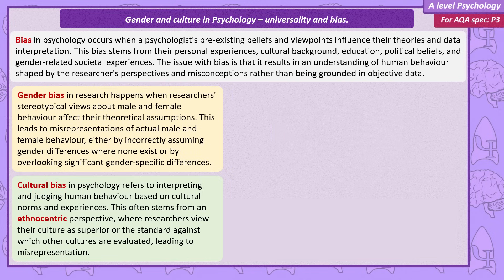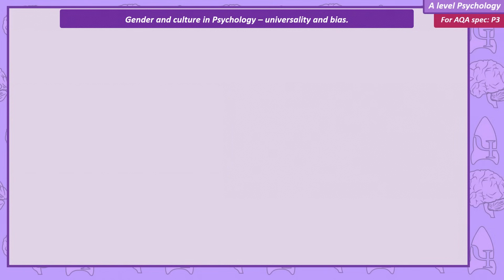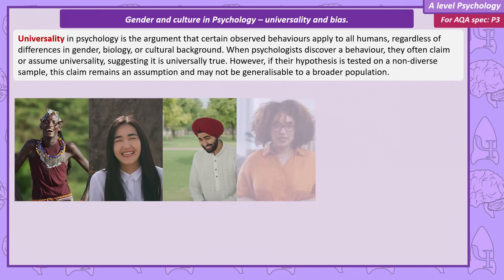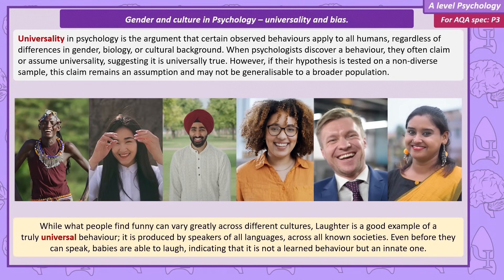One word I want to make clear before we discuss each type of bias in more detail is universality. Universality applied to psychology is the argument that observed behaviour is true of all humans, despite differences like gender, biology or cultural upbringing. When psychologists make a discovery, they're likely to claim — or it's automatically assumed — that the behaviour they've observed is true of all humans. They're claiming universality. But while it might be true of the sample in their study, if they haven't tested their hypothesis with a truly diverse sample, then this is just an assumption, one that might not be generalisable.